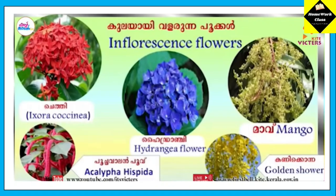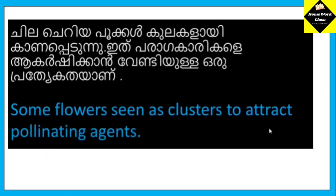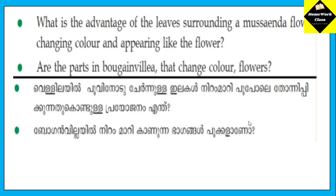Inflorescence flowers — we call them inflorescence flowers. Some flowers are seen as clusters to attract pollinating agents. This is the advantage of the leaves surrounding a Mossanda flower, changing color and appearing like a flower.